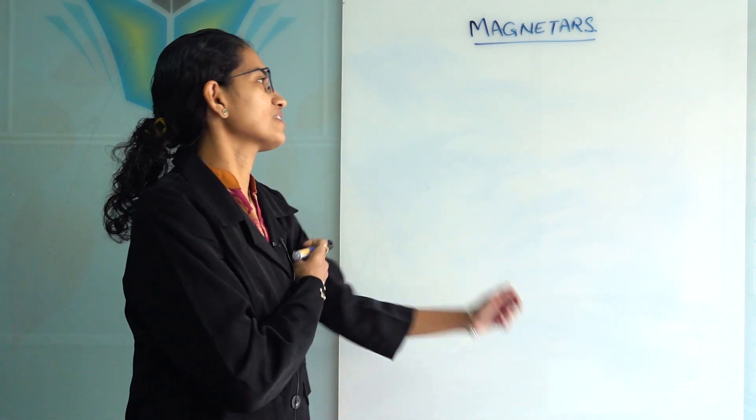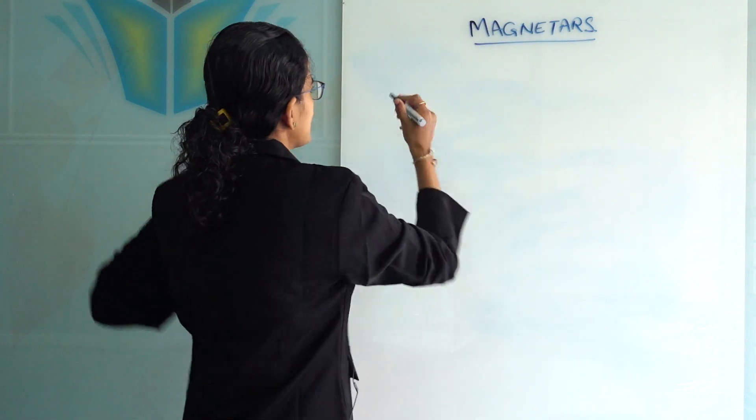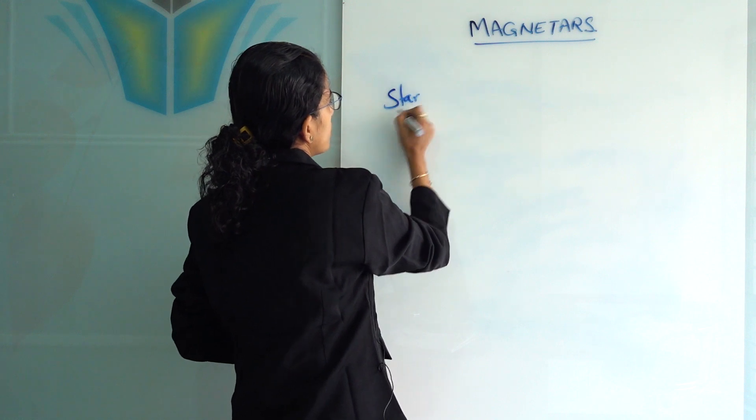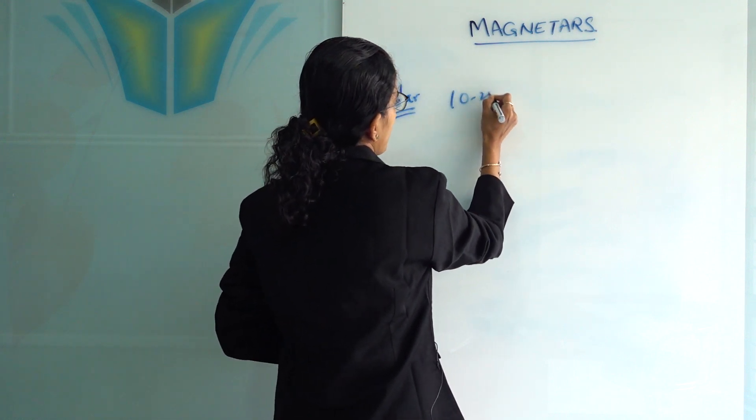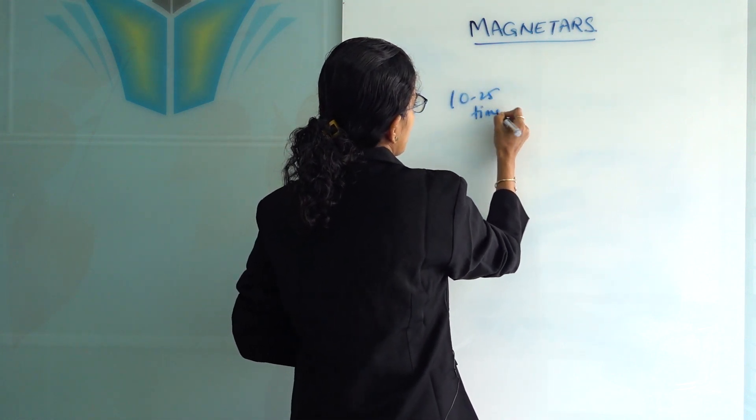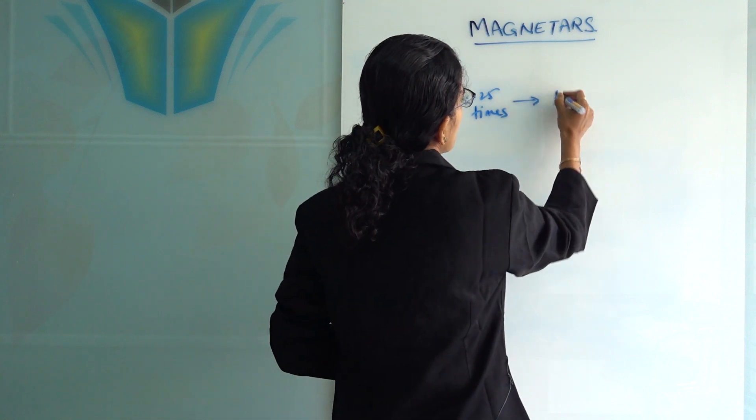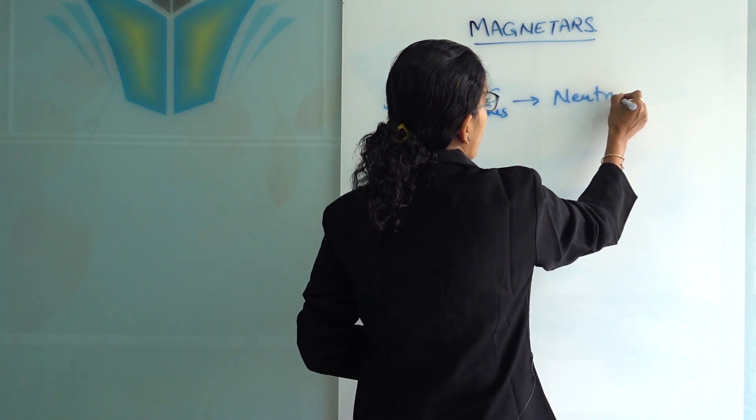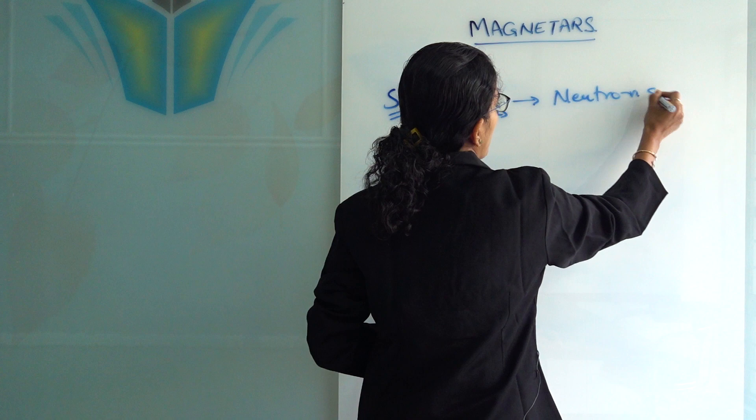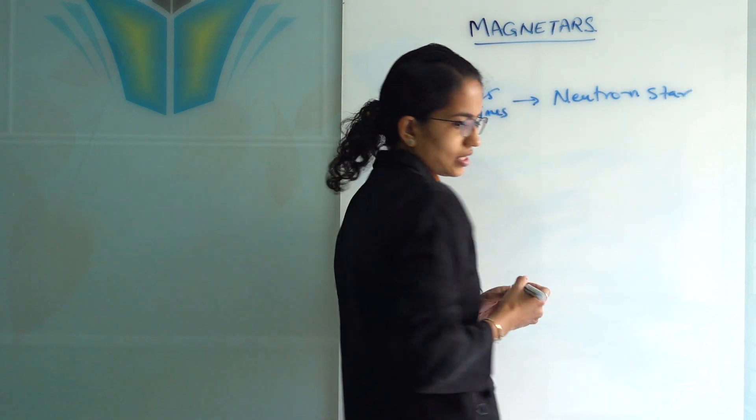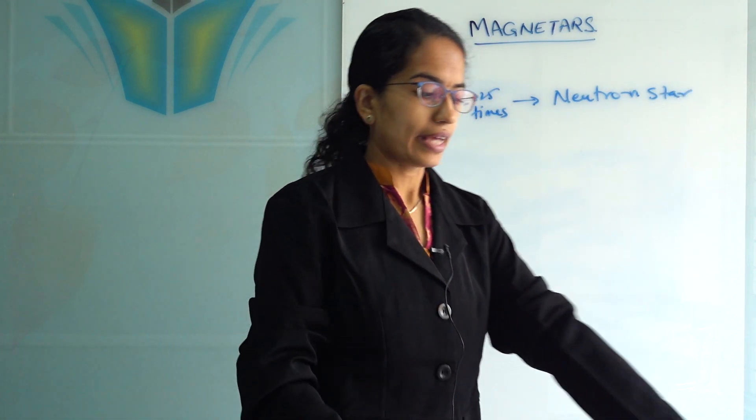An interesting topic in science and technology: magnetars. When a star has a solar mass of 10 to 25 times, they shrink into a neutron star. Not all neutron stars, but a few neutron stars change to magnetar.